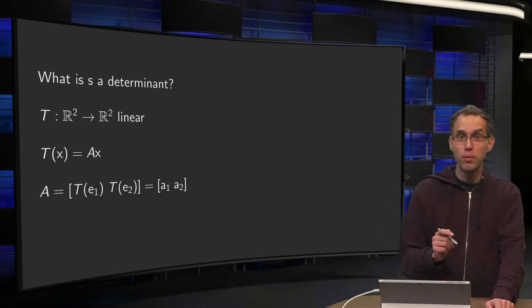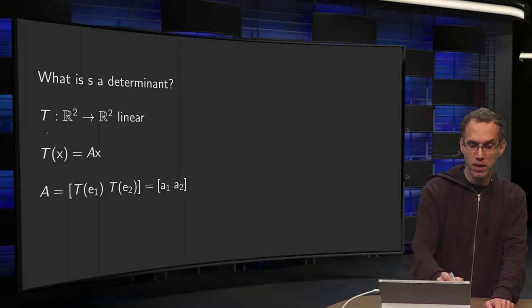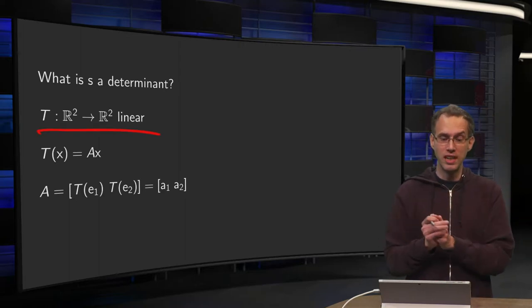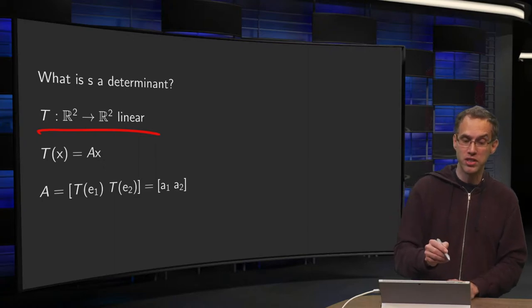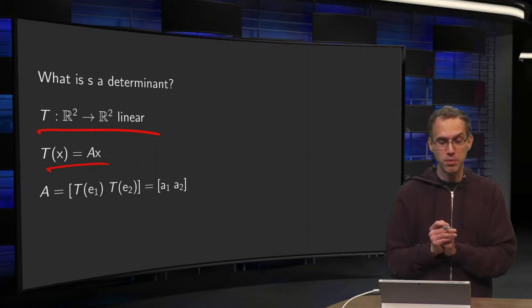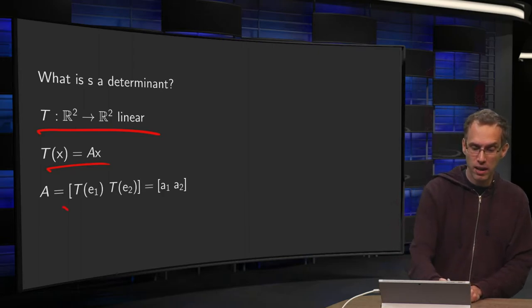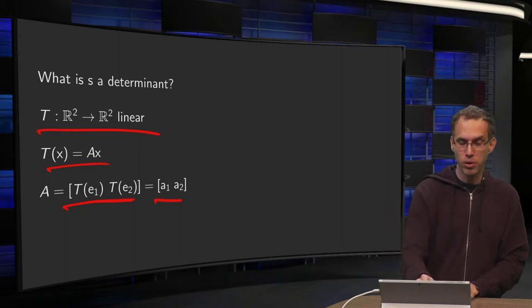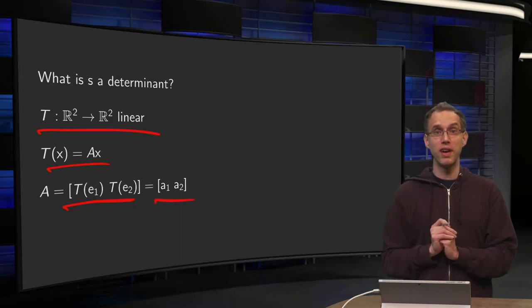We look at 2 by 2 matrices, so we take a transformation T from R² to R², T linear. So we know that it is implemented by some matrix A, T(x) equals Ax, where A consists of the image of E1 and the image of E2. Let's call them A1 and A2, columns of A.